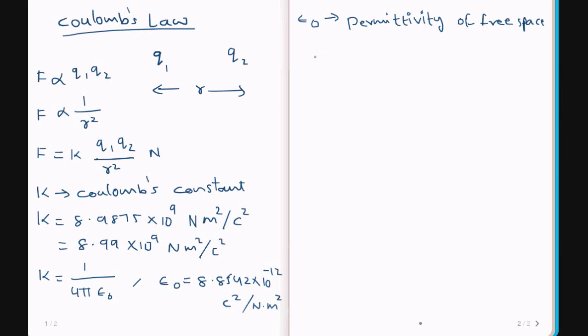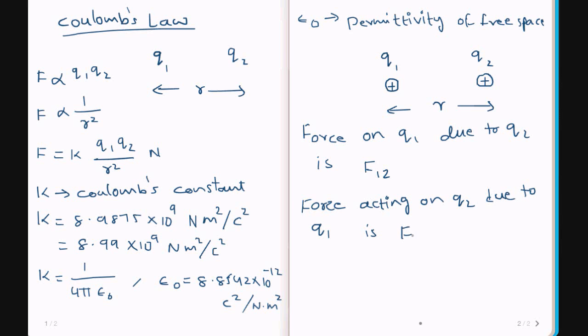The force between these point charges is repulsive if the charges are of the same sign. For instance, Q1 and Q2, if both these charges are positive, these are separated by distance R. The force acting on these particles is repulsive. Now, the force on Q1 due to Q2 is F12, because force is a vector. And the force acting on Q2 due to Q1 is F21.